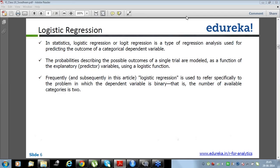Logistic regression is a type of regression analysis used for predicting the outcome of a categorical dependent variable. Remember, in linear regression the dependent variable was continuous, it was not categorical. But in logistic regression, it works only when the dependent variable is a categorical variable. The probability describing the possible outcome of a single trial are modeled as a function of explanatory variables using a logistic function. Frequently, logistic regression is used to refer specifically to the problem in which the dependent variable is binary, that is, the number of available categories is two.